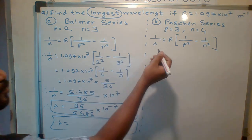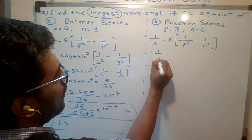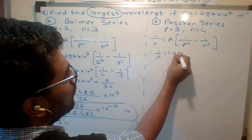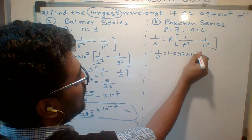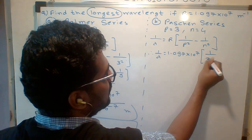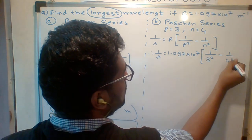Similarly, for Paschen series, put the R value of 1.097×10⁷, p value of 1/3² minus 1/4².